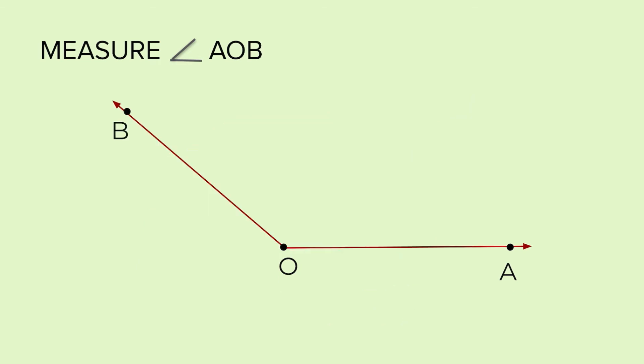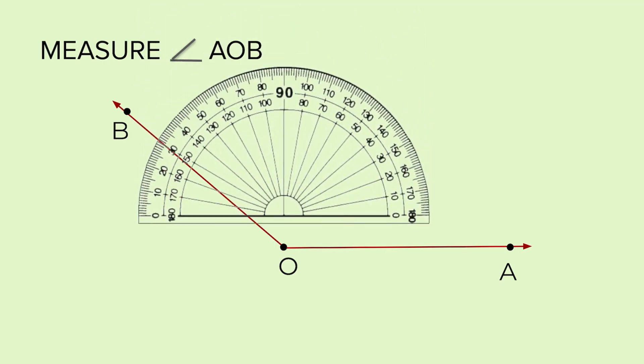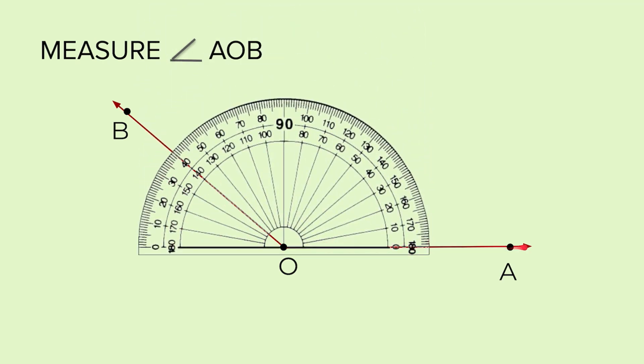Now, let's take another example. Now, this is an obtuse angle. It has to be more than 90 degrees. We take the protractor, put it on the vertex.